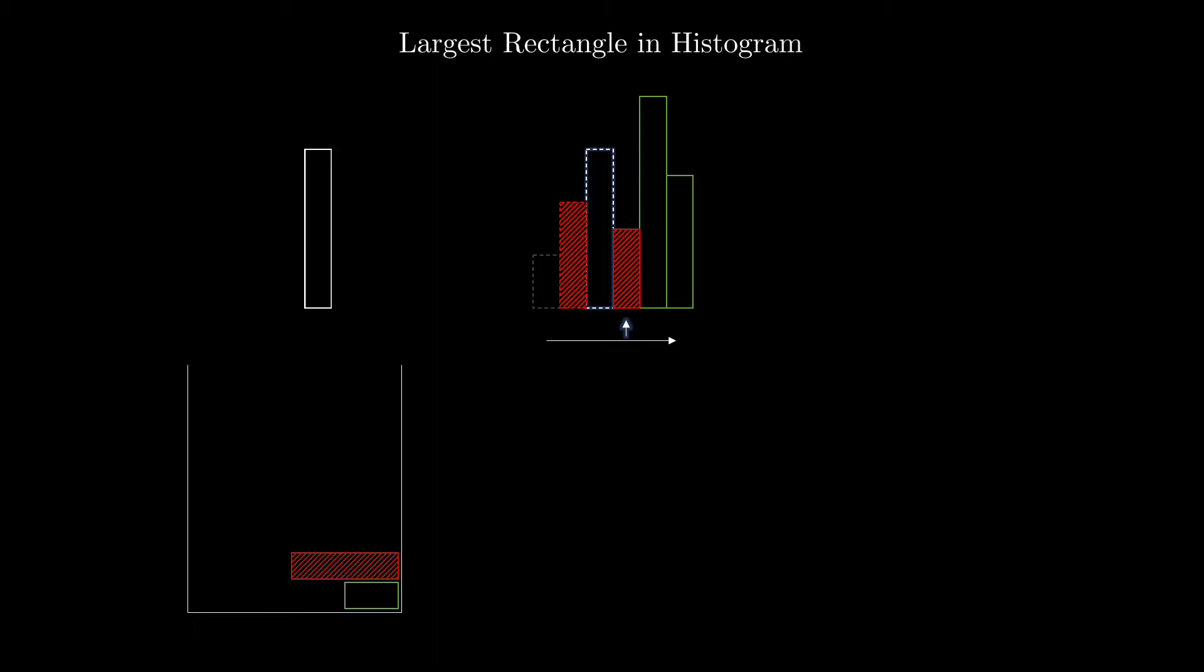As discussed, the rectangle formed between these left and right smaller elements with the height equal to popped element will give us the largest rectangle in the histogram which includes the popped element completely. We store this value as maximum area that we have found so far.